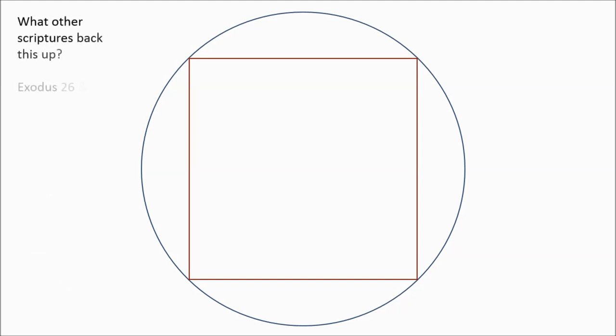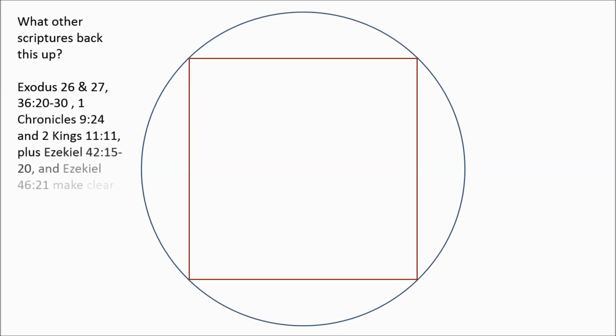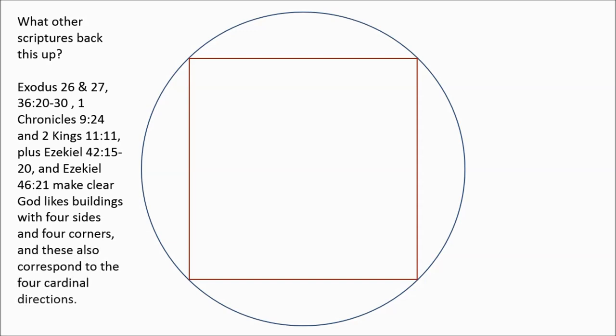And it's not the only scripture. All buildings that God commands to be built are always four square. They're always four-sided corners. They always face the four directions, the four cardinal directions: north, south, east, west. He never instructs anybody to build a circular building with a dome. It's never happened.